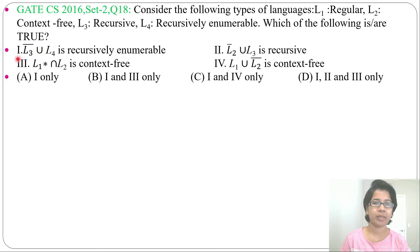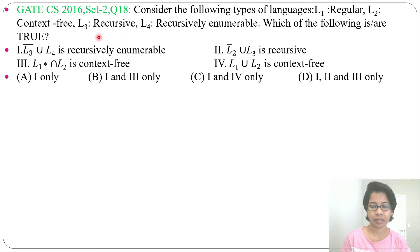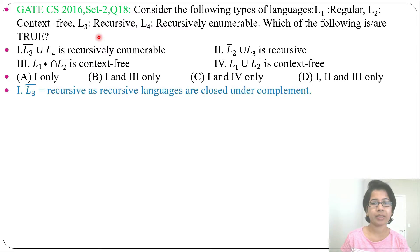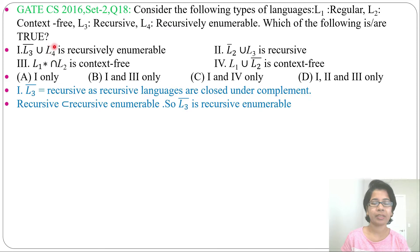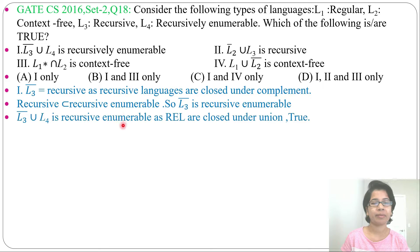Let's go one by one through each statement. First statement: L3 complement union L4. What is L3? L3 is recursive, and recursive language is closed under complement, so L3 complement will be recursive. Recursive is also a subset of recursive enumerable, so L3 complement can be recursive enumerable. Now recursive enumerable union recursive enumerable will be recursive enumerable, as recursive enumerable is closed under union. So this is true.